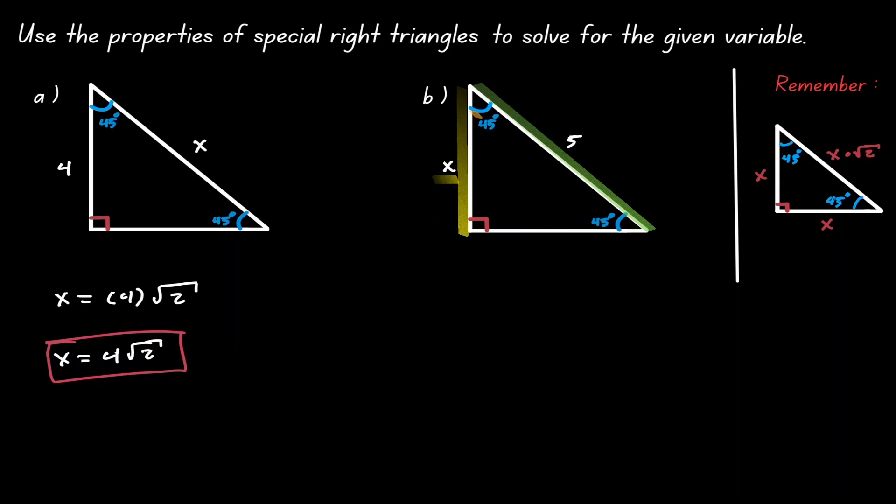But we do notice that this is a 45, 45, 90 degree triangle. And we know some relationship about the sides of that specific triangle. And the relationship is that the hypotenuse in this right triangle is equal to the square root of two times the leg of my right triangle.